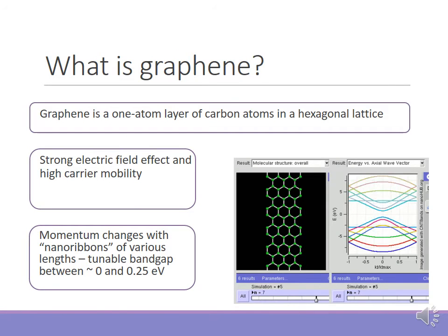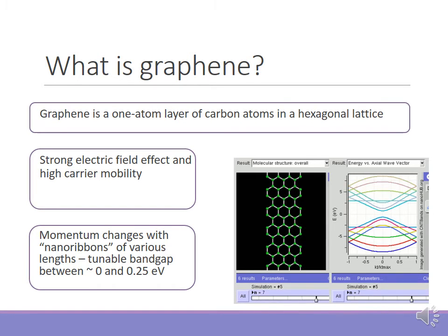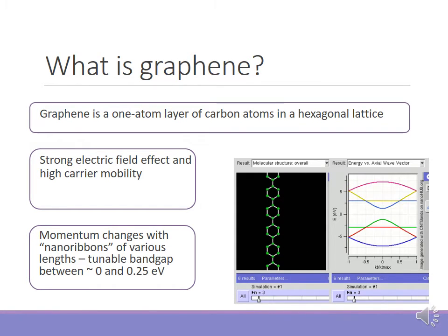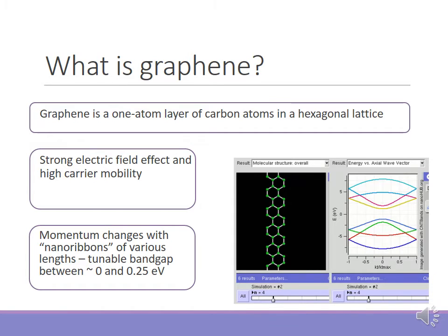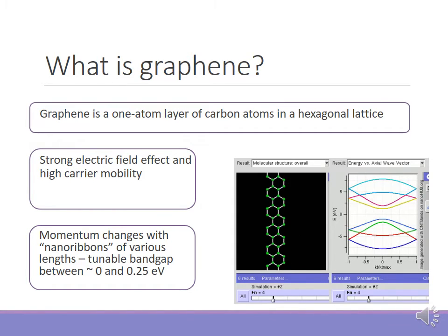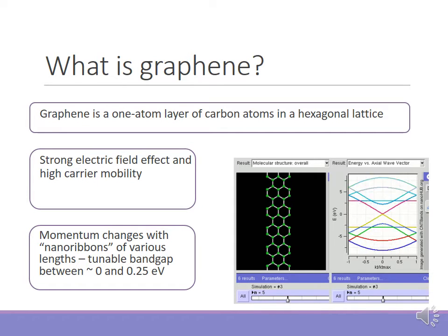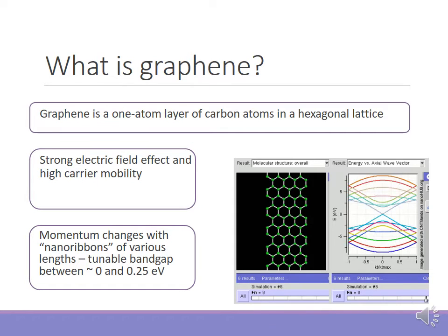Now that I've given a quick history of transistors, I'm going to start talking about graphene itself. So what is graphene? Graphene is a one-atom layer of carbon atoms in a 2D hexagonal lattice. Graphene has a lot of mechanical and thermal properties, but the relevant properties for making a transistor are the fact that it has a strong electric field effect and a very high carrier mobility, similar to that of a metal.